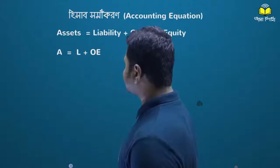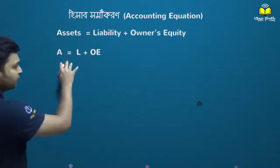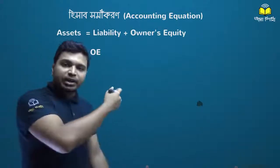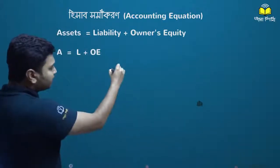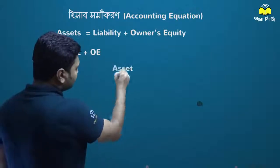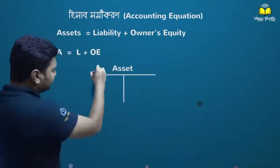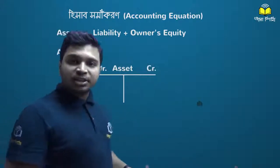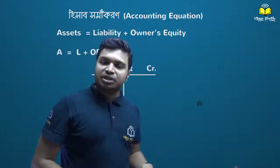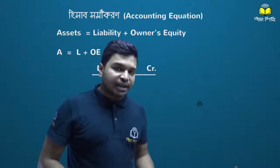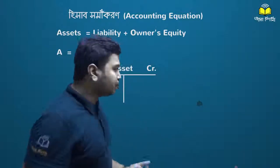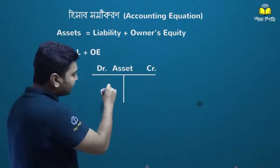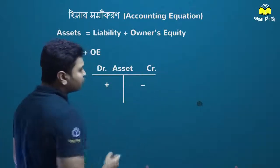We know the asset is a debit, and the credit is a debit. And we know the asset that is a debit, and the credit is a debit. We know the debit is a debit, and credit is a debit. So which asset is the debit card, credit card, and cash?